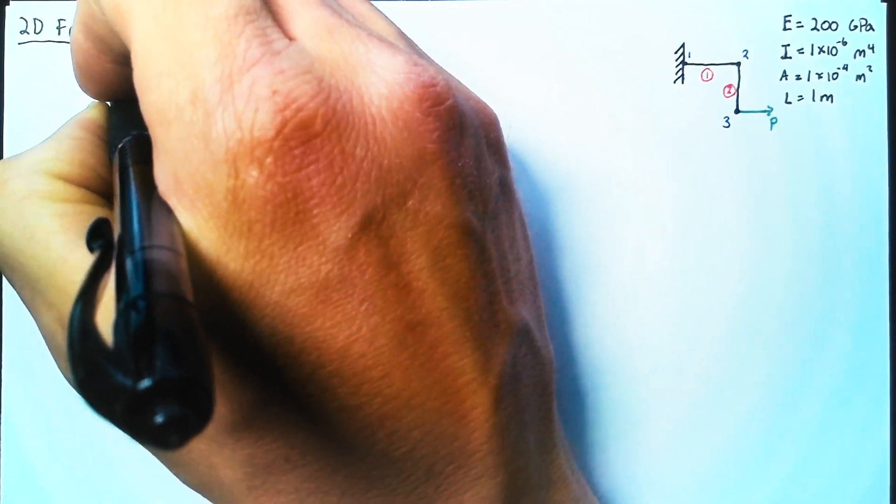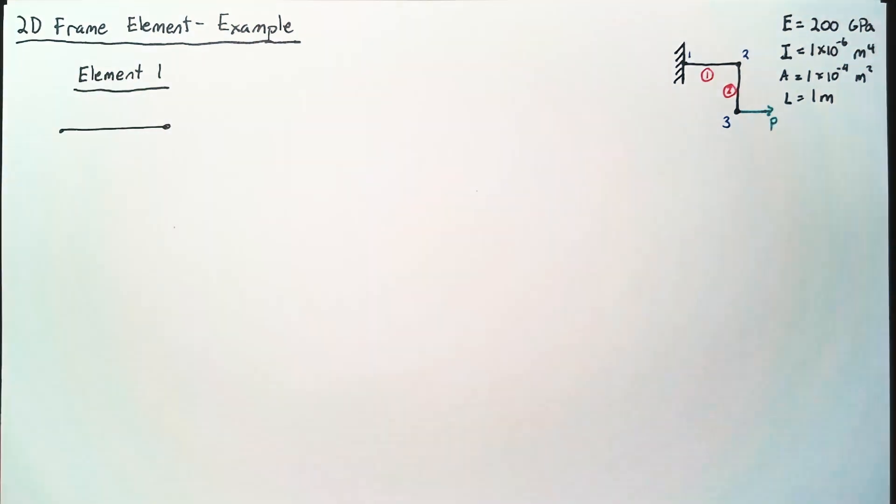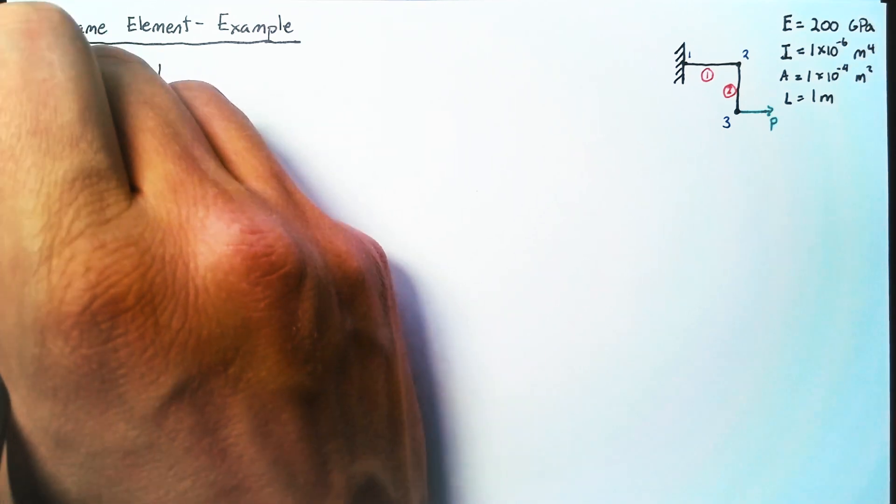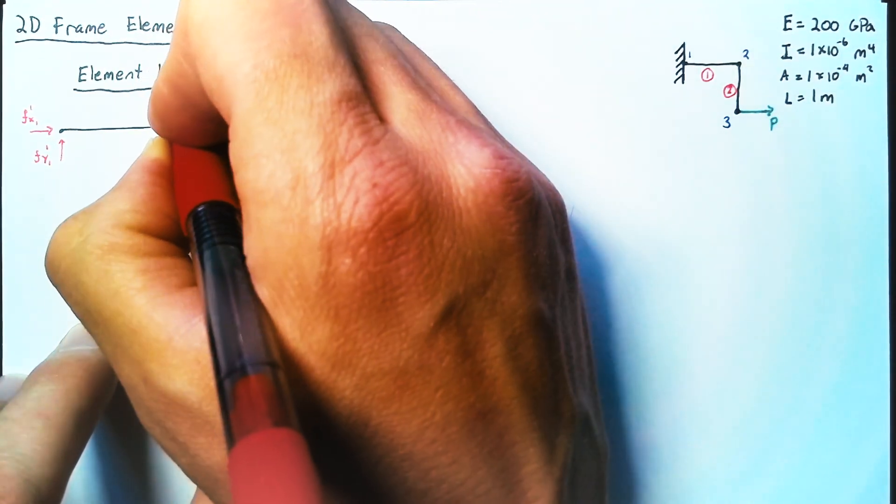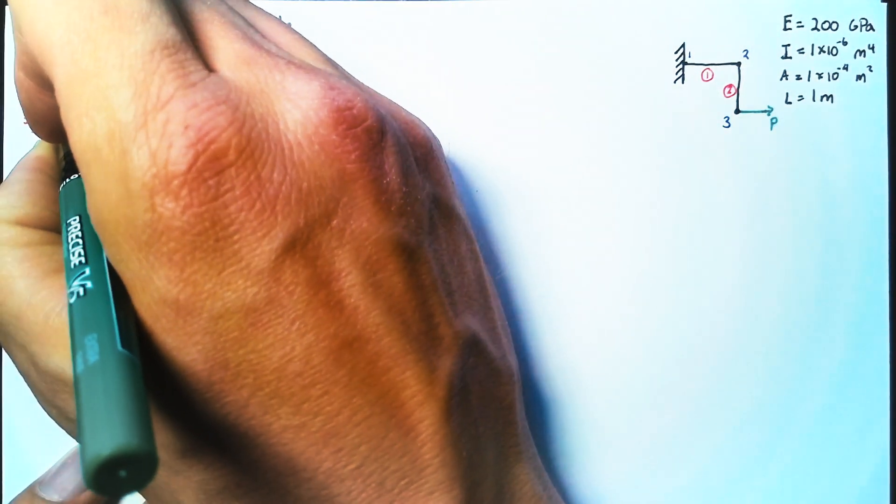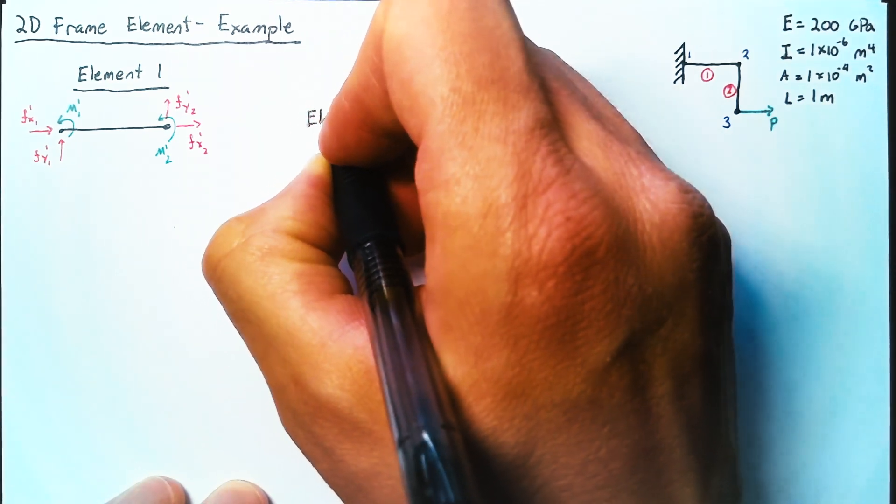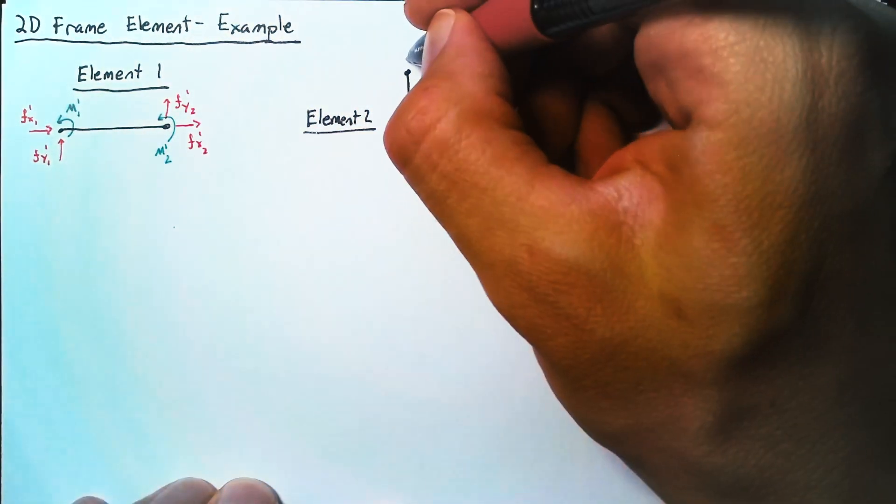Now we have two elements, so let's look at each of those individually and just label all of our forces and moments. In both cases, we're going to have forces in the X and Y on each of our nodes. And we label these so that the subscript refers to the node, and the superscript refers to the element.